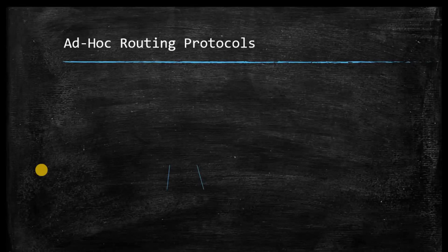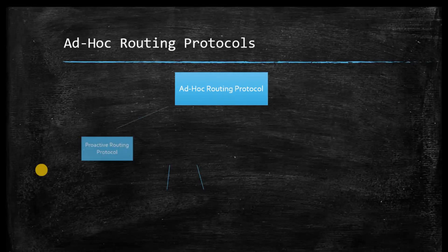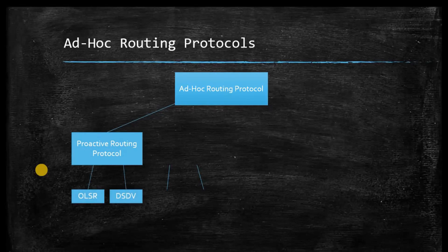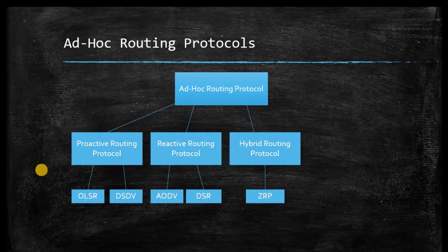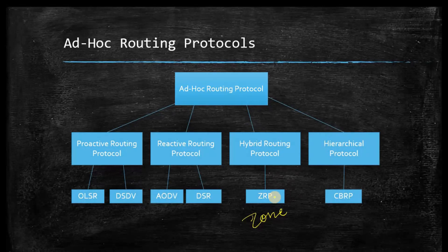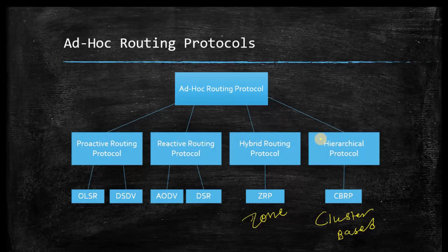Ad-hoc routing protocols are majorly classified into four categories. The first is proactive routing protocol, which includes OLSR (Optimized Link State Routing) and DSDV (Destination Sequence Distance Vector routing). The second is reactive protocol, which includes AODV and DSR. The third is hybrid routing protocol, which includes ZRP (Zone Routing Protocol). The fourth is hierarchical routing, which includes CBRP (Cluster Based Routing Protocol).